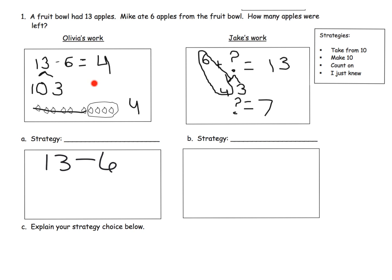So the idea is Olivia clearly is using decomposition. She's using the take from 10 strategy. However, it looks like she messed up because we see that 10 minus 6 is 4, but she forgot to add in that original 3 that was part of the 13. So really the answer should be 4 plus 3, which is 7, not the 4 that she got.